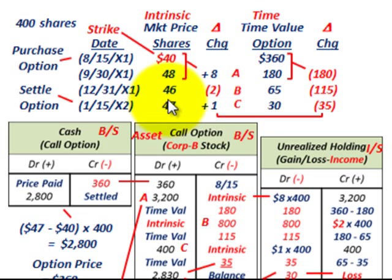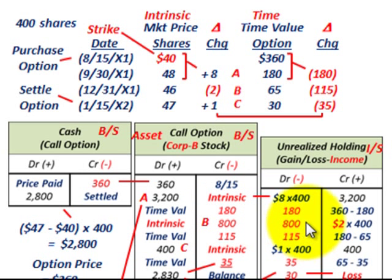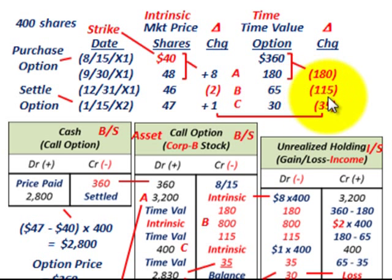Looking at our next period, we look at it from a period-to-period basis. We started out at $48 and went down to $46, so we had a loss of $2 per share. The time value also went down from $180 to $65, so we lost $115. For the intrinsic value, we credit or reduce the call option by $800 — that's the $2 decrease per share times 400 shares — and debit unrealized holding loss for $800. For the time value portion, we credit our call option by $115 and debit unrealized holding loss $115.